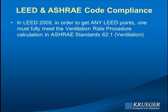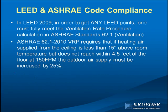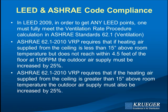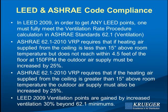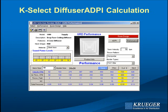LEED will give you a point for complying with relevant standards. Complying with 62.1 is a prerequisite and is in code. The ventilation rate procedure states that if the heating air is less than 15°F above room temperature and doesn't make it to the window, you must increase airflow by 25%; and if it is 15°F above room temperature regardless of where it goes, you must increase the air supply by 25% to address short-circuiting. This is code, not a suggestion. LEED 2009 also gives a point for increasing ventilation 30% beyond minimum.